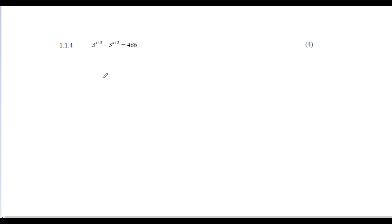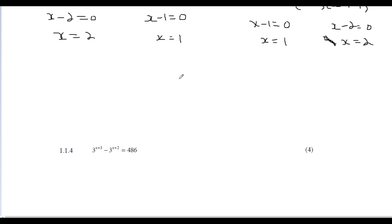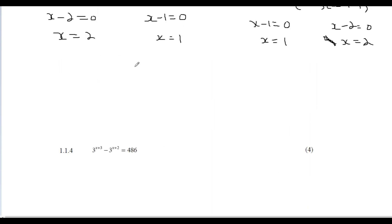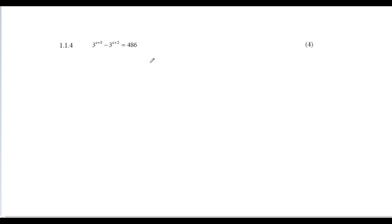Last question: 3^(x+3) - 3^(x+2) = 486. This is four marks. Notice our unknown x is in the exponent this time, not the base. The first thing to deal with is the 486 — it doesn't look as clean as the other numbers.